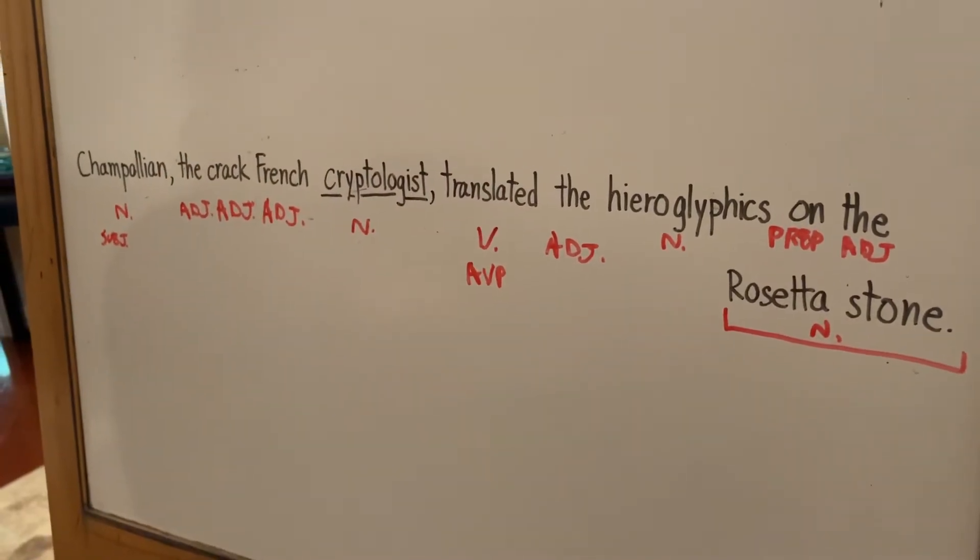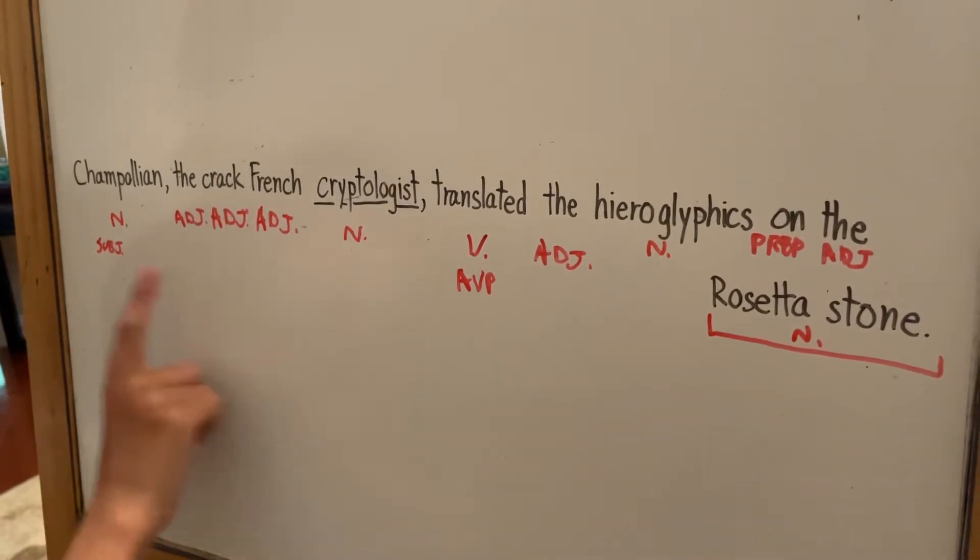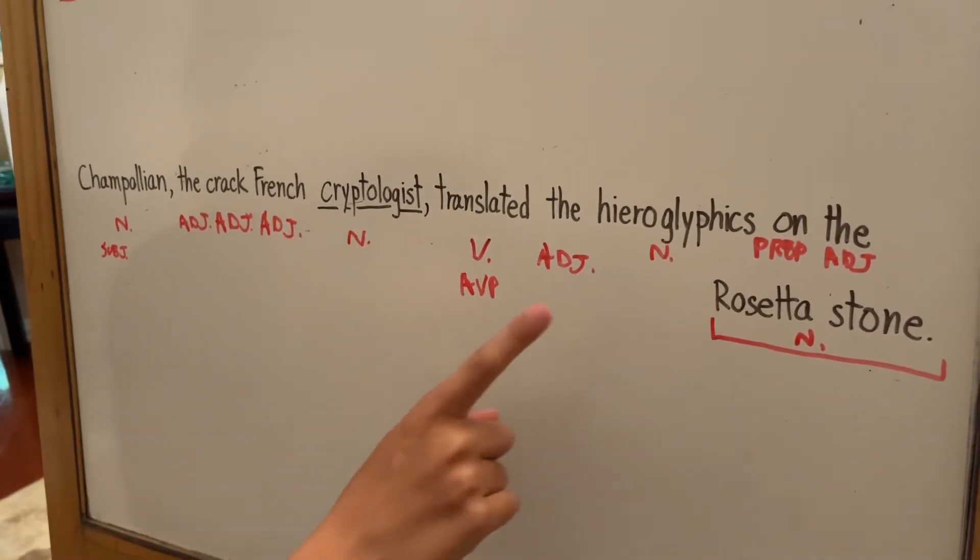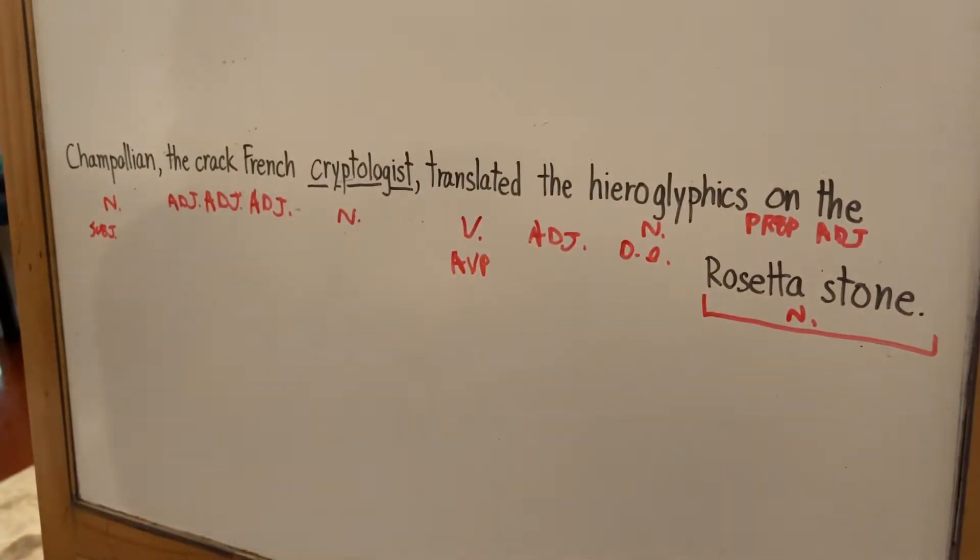And then our direct object is going to be hieroglyphics, because what did Trampoleon translate? He translated the hieroglyphics. So that's our direct object.